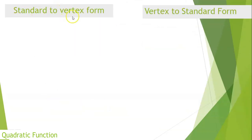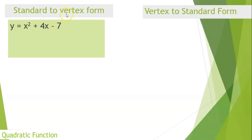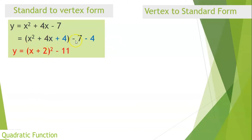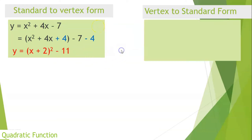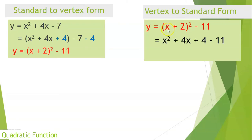Let's convert equations from standard to vertex and vertex to standard form. The quadratic function is x² + 4x − 7. To rewrite to vertex form using completing the square: group x terms, constant at the other end. Half of 4 is 2; square that to get 4, add 4 and subtract 4 to maintain equality. Rewriting to binomial form: (x + 2)² − 11. To go back to standard, expand to get x² + 4x + 4 − 11 = x² + 4x − 7, which is the original.